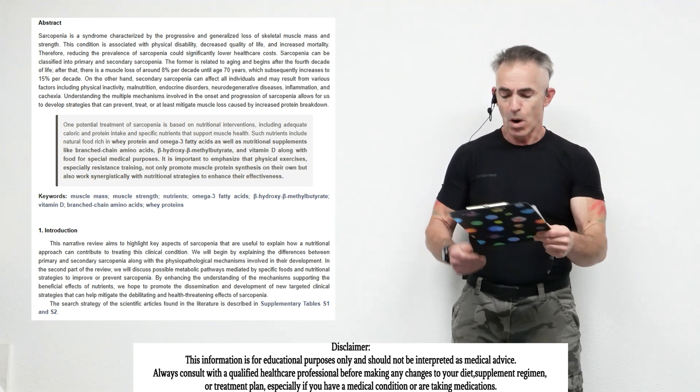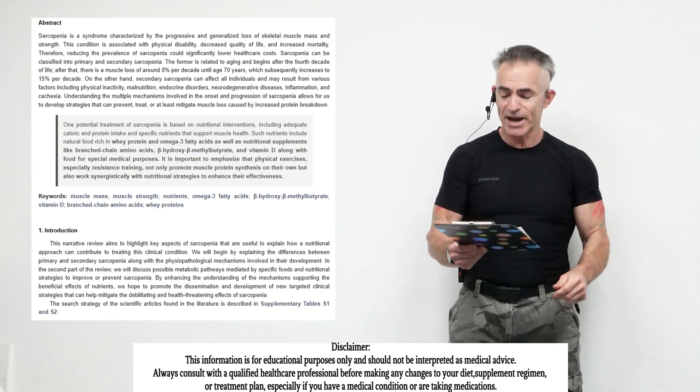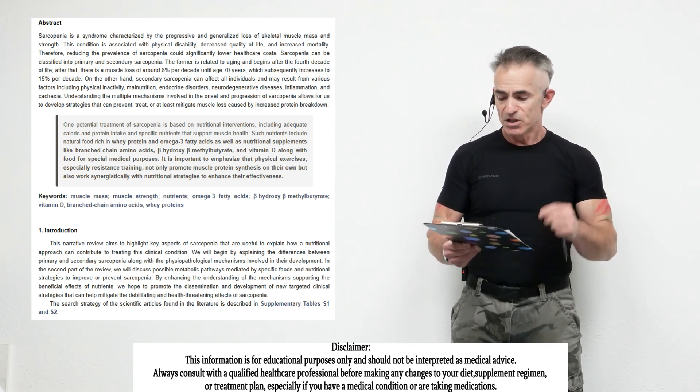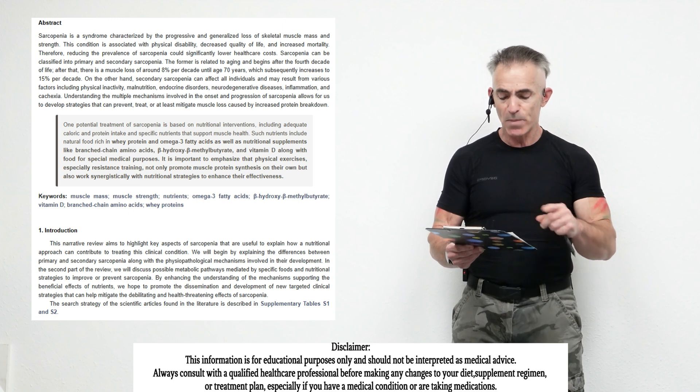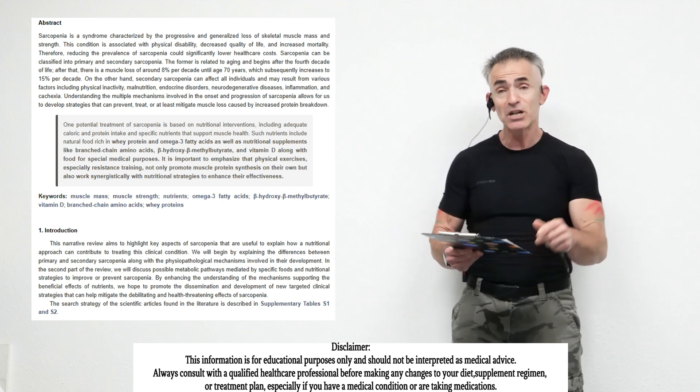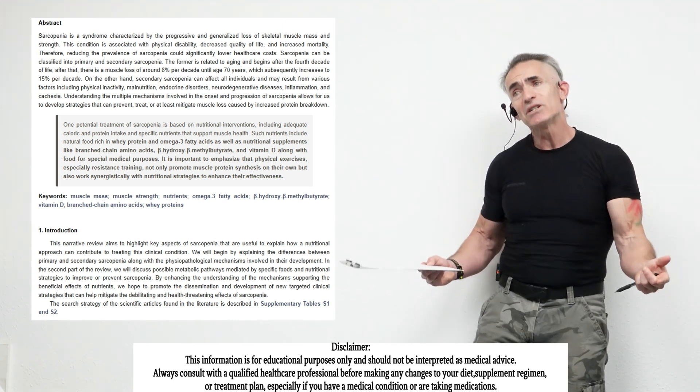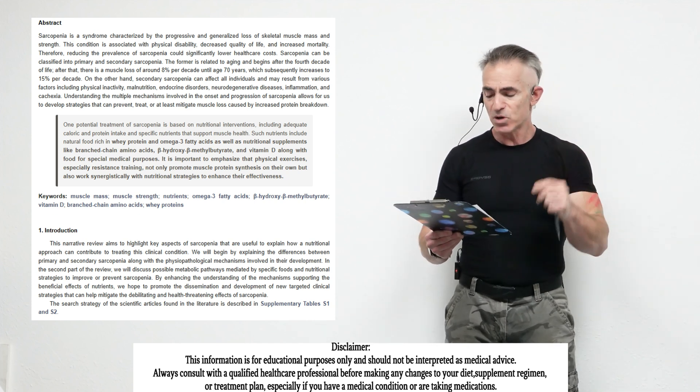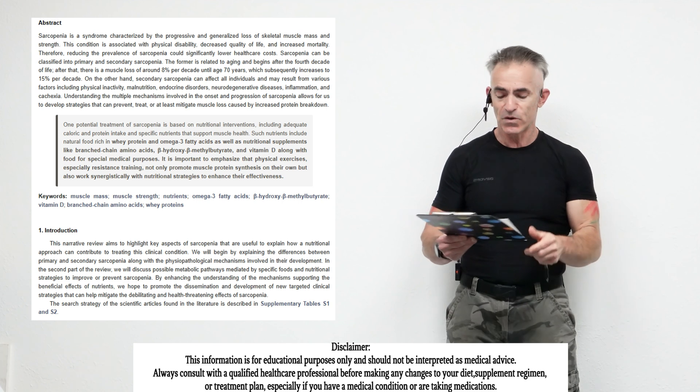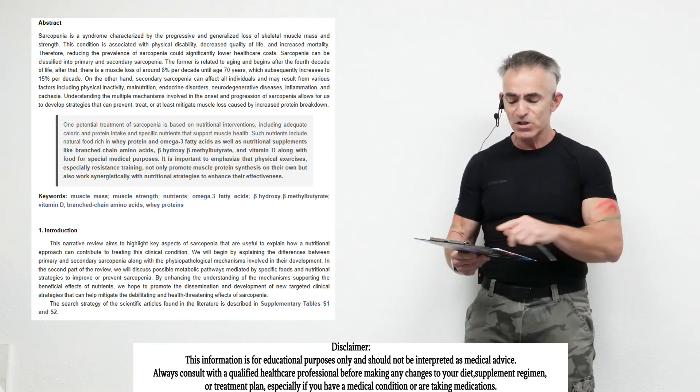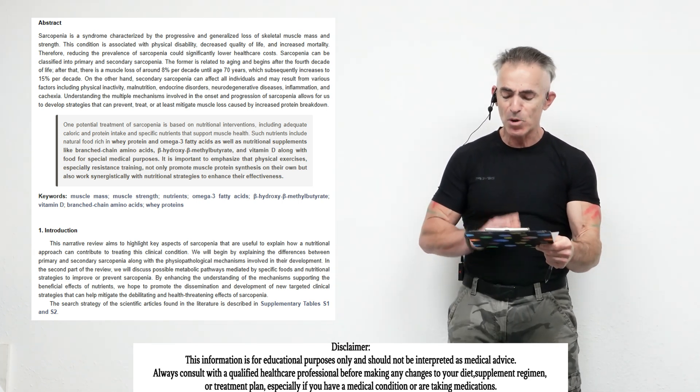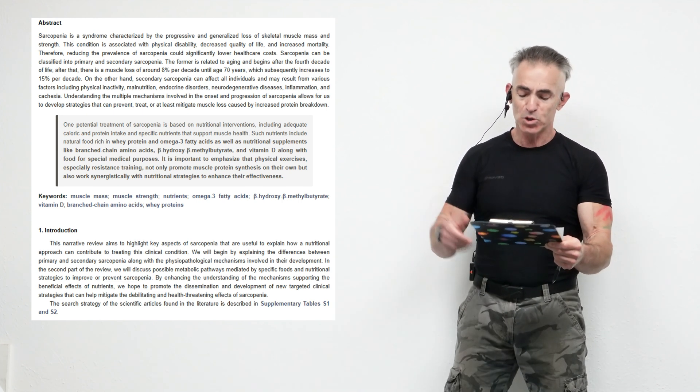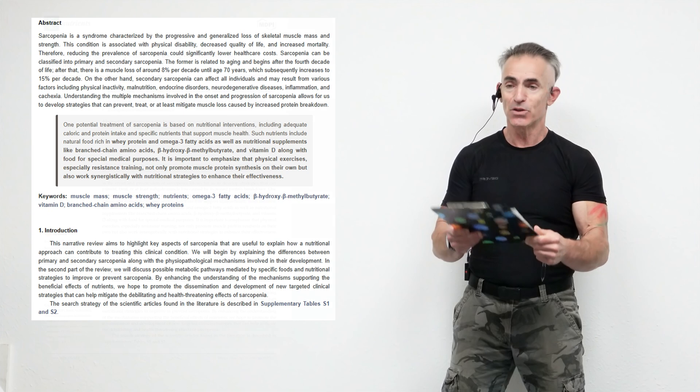Conclusion. One potential treatment to sarcopenia is based on nutritional interventions, including adequate caloric and protein intake, and specific nutrients that support muscle health. Such nutrients include natural food rich in whey proteins and omega-3 fatty acids, as well as nutritional supplements like branch chain amino acids, which we didn't cover too much in detail because HMB being a metabolite of leucine, beta-hydroxy-methylbutyrate, and vitamin D, along with food for special medical purposes. It is important to emphasize that physical exercise and especially resistance training not only promotes muscle protein synthesis on their own, but also works synergistically with nutritional strategies to enhance their effectiveness.